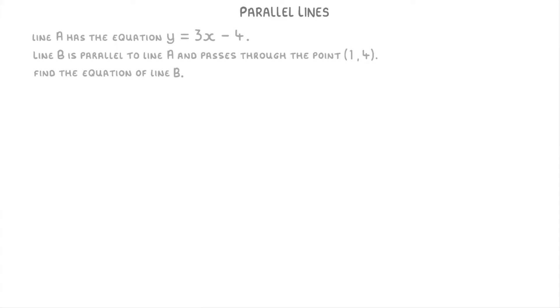So first of all, the main thing to remember with questions like this is that in order to find the equation of any line, in this case line B, we always need to know two things. One is the gradient of that line. And the other is a set of coordinates that the line passes through.